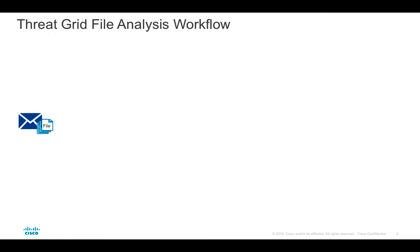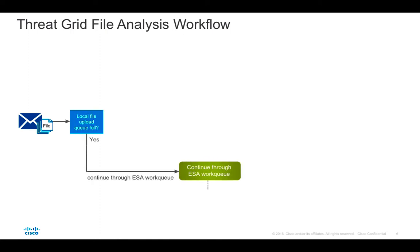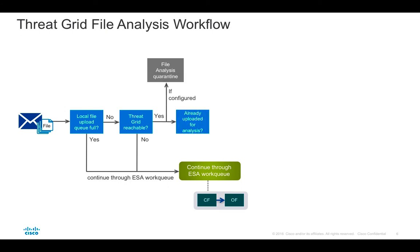In the third phase, more validations are performed before ESA finally uploads the attachment to ThreatGrid. First, ESA checks whether the local file upload queue is full and whether ThreatGrid — public or appliance — is reachable. If either condition is not met, the attachment is not sent and the message continues through the ESA work queue. Assuming the queue is not full and ThreatGrid is reachable, ESA places the associated message into the file analysis quarantine. ESA also checks whether the attachment was already uploaded to ThreatGrid by another device, such as another ESA in your deployment — if so, a duplicate will not be uploaded, avoiding unnecessary use of upload limits.